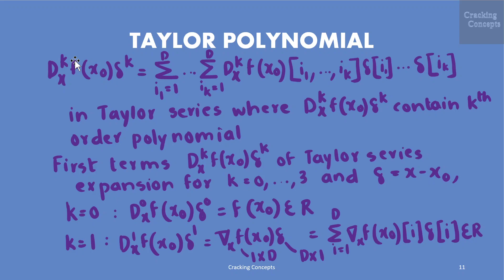Now let us explicitly write down the first terms of the Taylor series expansion for k from 0 to 3, with δ = x − x₀. For k=0: f⁽⁰⁾(x₀)·δ⁰ = f(x₀), which is a real number. For k=1: f⁽¹⁾(x₀)·δ = ∇f(x₀)ᵀδ, where the gradient has dimension 1×d and δ has dimension d×1, giving Σ(i=1 to d) [∇f(x₀)]ᵢ δᵢ, which is a real number.